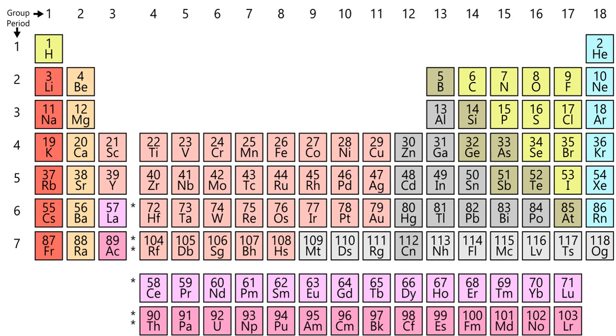The first transuranium element, element with atomic number greater than 92, discovered was neptunium in 1940. Since 1999, claims for the discovery of new elements have been considered by the IUPAC/IUPAP Joint Working Party. As of January 2016, all 118 elements have been confirmed as discovered by IUPAC. The discovery of element 112 was acknowledged in 2009, and the name copernicium and the atomic symbol Cn were suggested for it. The name and symbol were officially endorsed by IUPAC on 19 February 2010.